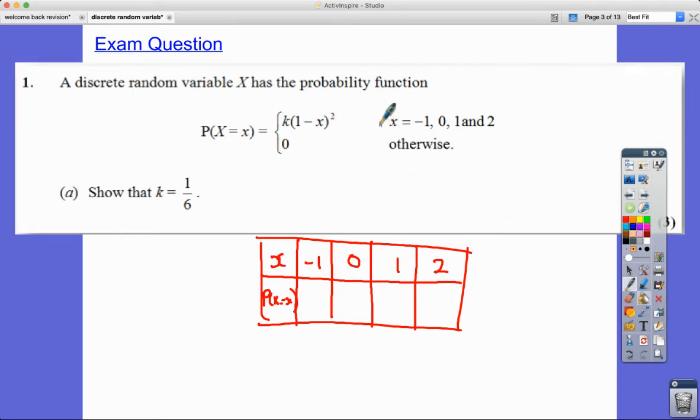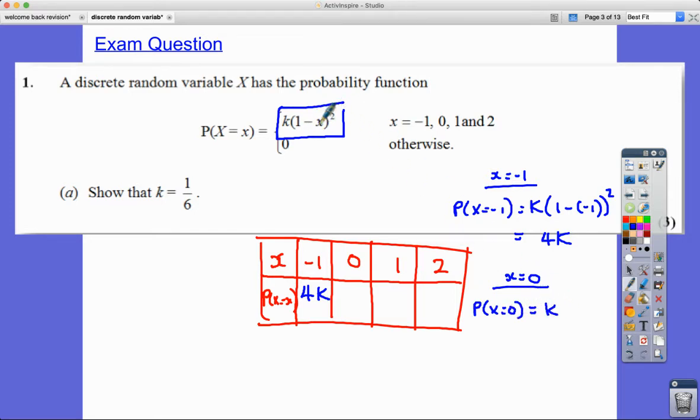Now, how would we work these out? We work them out using this formula. So if x is equal to negative one, we can see that the probability that x equals negative one is equal to k(1-(-1))² which is 2². So this is actually going to be equal to 4k. If we have x equal to zero now, the probability that my x value is zero is going to be k(1-0)² which is 1². So it's just k.